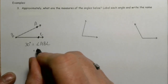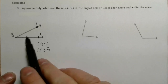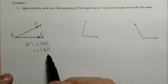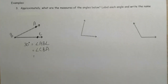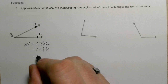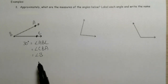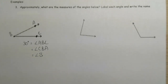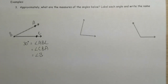It doesn't really matter which direction you go — it's still going to identify the same angle. You could also, if it doesn't create confusion, call this angle B and just use the vertex to label that angle. That's okay as long as point B isn't part of another angle in a more complicated diagram.